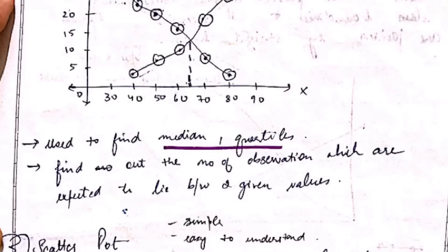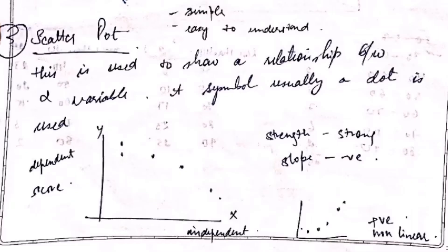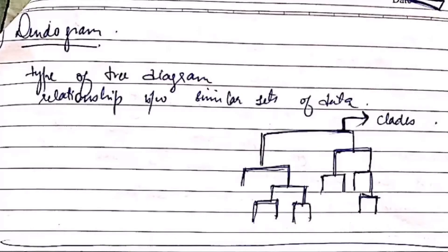Next is scatter plot — it is scattered all around. This is used to show a relationship between two variables and the symbol is usually a dot. It is simple and easy to understand.